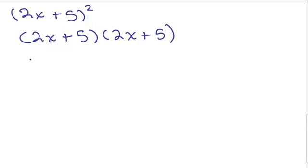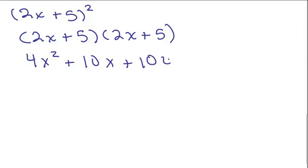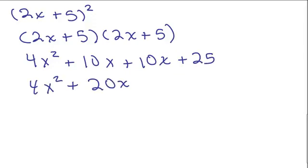2x times 2x is 4x squared. The outer term, 2x times 5, is plus 10x. The inner term, 5 times 2x, is 10x. And 5 times 5, the last terms, multiply together to give 25. So we get 4x squared plus 20x plus 25.